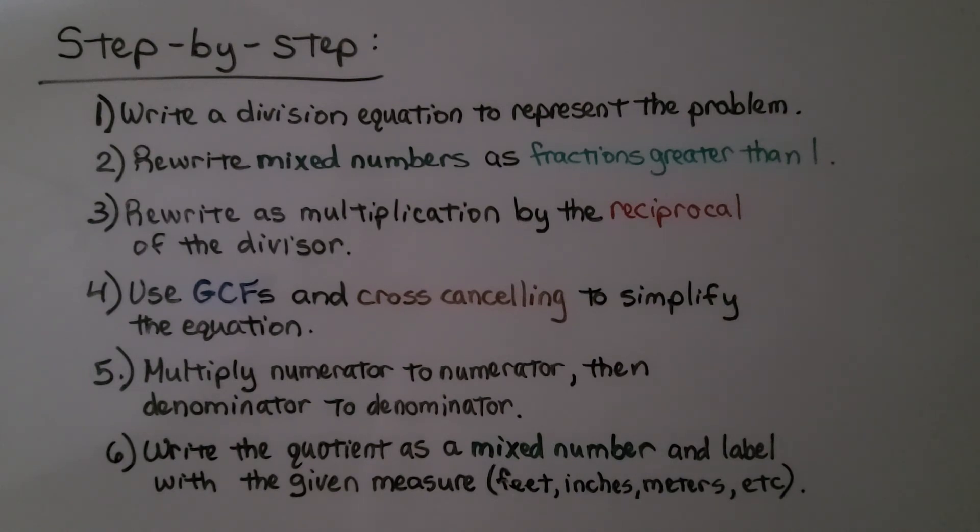So, step by step, this is what we have. We write a division equation to represent the problem. We rewrite mixed numbers as fractions greater than 1. We rewrite as multiplication by the reciprocal of the divisor. Then we use the greatest common factors in cross canceling to simplify the equation. Then we multiply numerator to numerator, then denominator to denominator. And the last thing we do is write the quotient as a mixed number and label with the given measure because this is area.